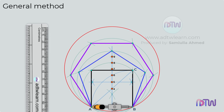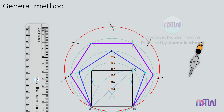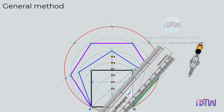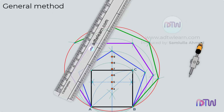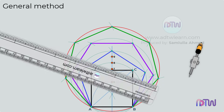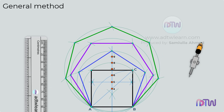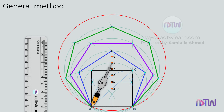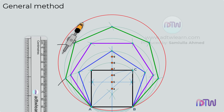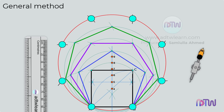Adjust the compass to length AB and use this length to cut arcs on the circumference of the circle. To draw an octagon, adjust the compass to the length between point 8 and A, and using point 8 as the center, draw a circle. Adjust the compass to length AB and cut arcs on the circumference. If we join these points, we will get an octagon.